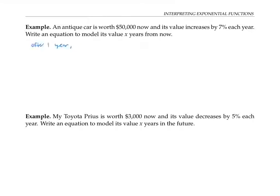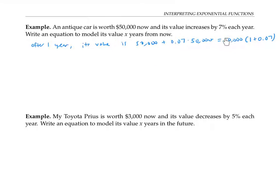After one year, its value is 50,000 plus 0.07 times 50,000. That's because its value has grown by 7%, or 0.07 times 50,000. This can be written as 50,000 times one plus 0.07. Notice that adding 7% to the original value is the same as multiplying the original value by 1.07.